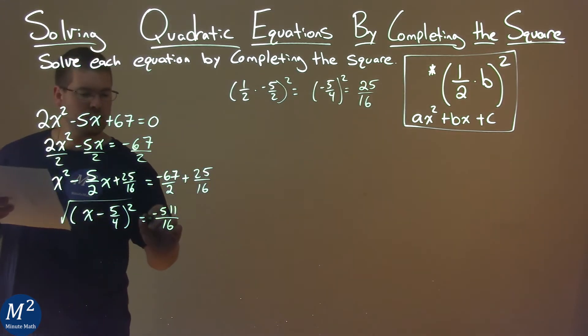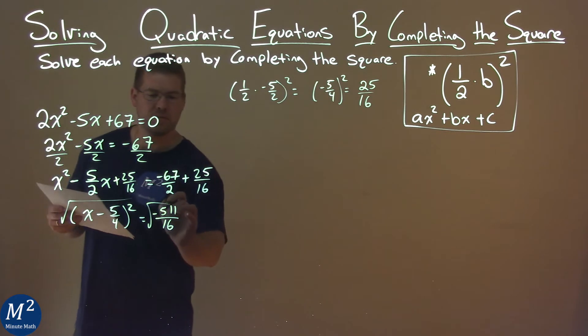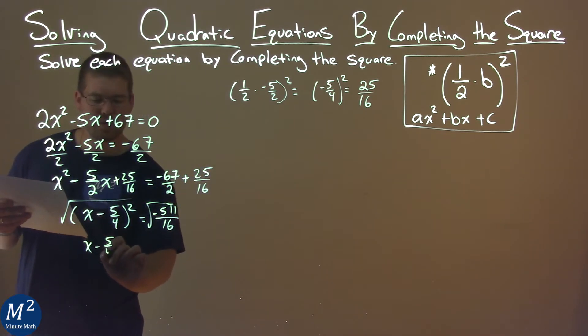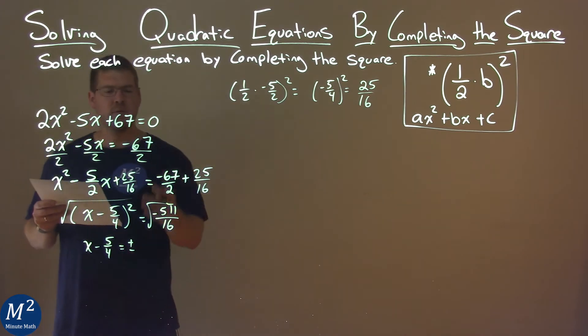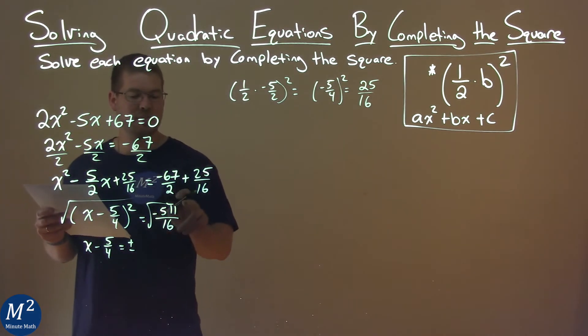We now take the square root of both sides, same process. We have x minus 5 fourths equals plus or minus the square root of negative 511 over 16.